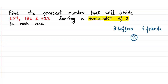So the remainder is always the extra part that cannot be divided. Now here in this question we have to find the greatest number that will divide these 3 numbers such that the remainder is 2 in each case.